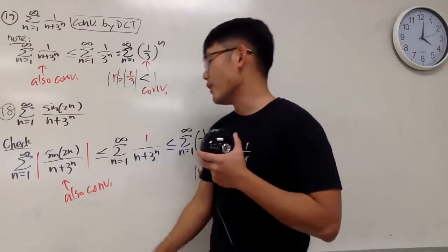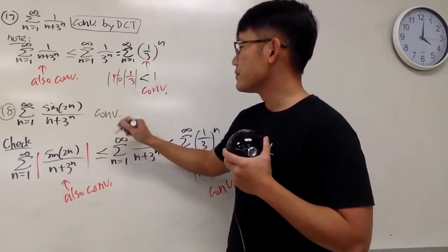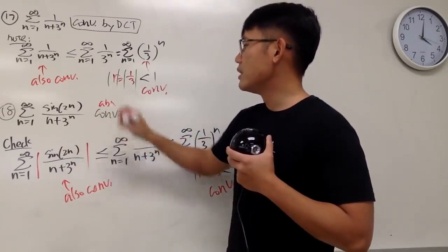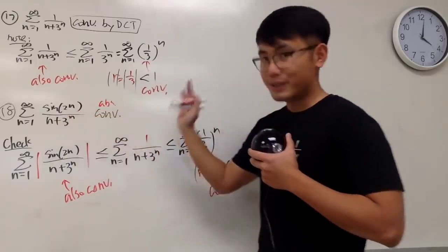And now here's the deal, you took the absolute value and it converges, you can say this right here absolute converges, up to you though, depends on the question. But you can just say this right here converges.